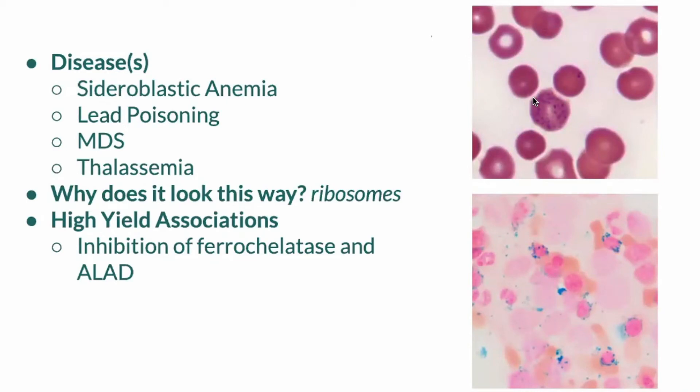The reason that the red blood cells have that speckled pattern to them is because when you have a sideroblastic anemia — for instance, with lead poisoning — in which you have inhibition of ferrochelatase and ALAD, the ribosome components build up and they get stained.